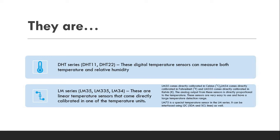The next series is called LM series: LM35, LM335, LM34. These are the linear temperature sensors that come directly calibrated in any one of the temperature units. For instance, LM35, if you take, it's calibrated directly for Celsius so you can measure the temperature in Celsius. LM34 comes directly with Fahrenheit calibration. You can measure temperature in Fahrenheit. LM335 comes directly with Kelvin support.